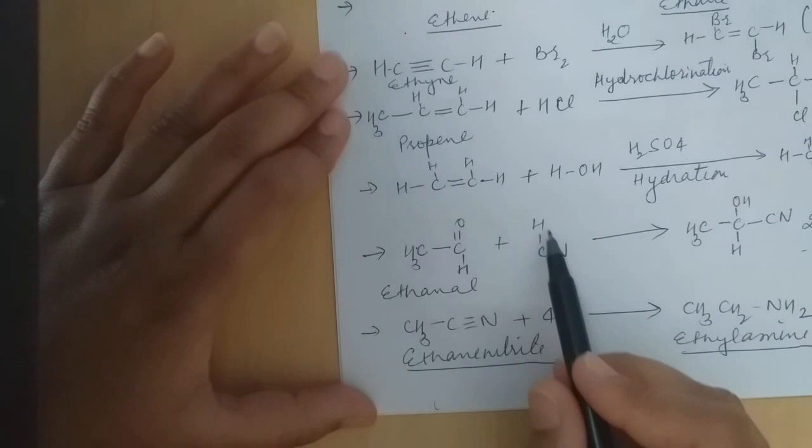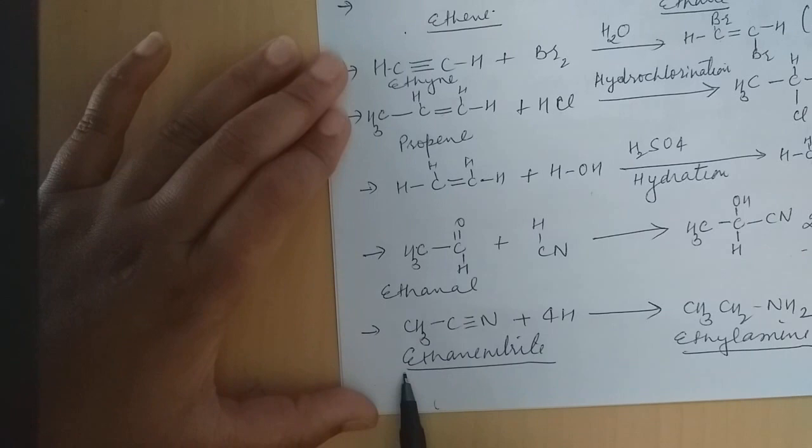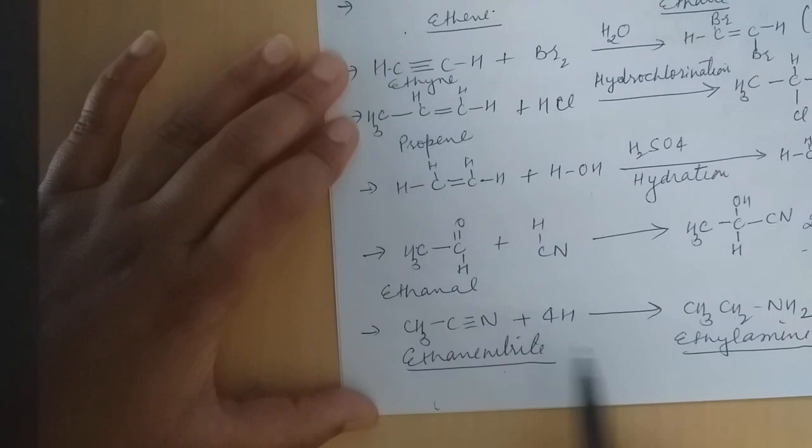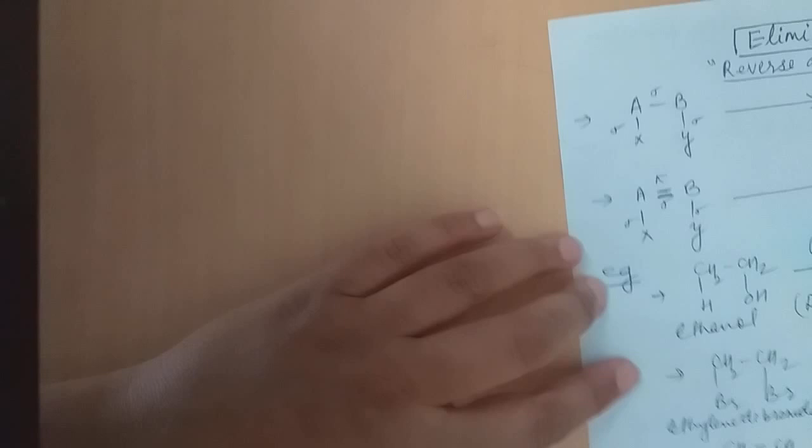If we have an aldehyde group on it — with HCN — cyanohydrin is formed. This is the addition product. If we do reduction of ethyl nitrile with 4H, in this condition we also have 2 hydrogens and 2 pi bonds which are broken, and ethylamine is the addition product. We will now go to the next — Elimination Reaction.